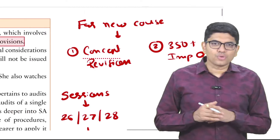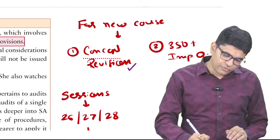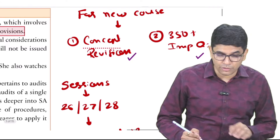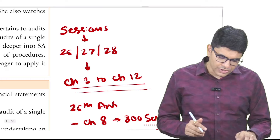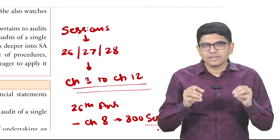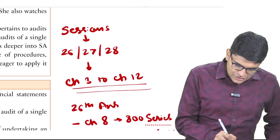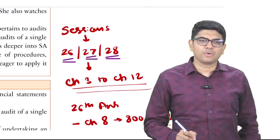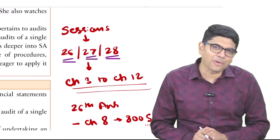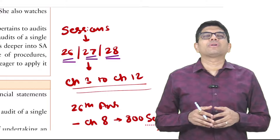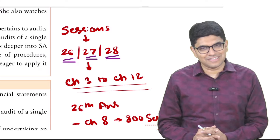What we have done is for the new course, we have made two types of revision videos: one is full concept revision, and 350-plus important question revision, and we have recorded all of them. We were left with only one part — chapter 3 to chapter 12, all concept revision in English. Hindi, we are through with everything. We planned this with the Chennai branch on 26, 27, and 28. Today's 26th session had some technical problems, so I re-recorded it quickly. In this video, we are going to cover SA 800, 805, and 810.